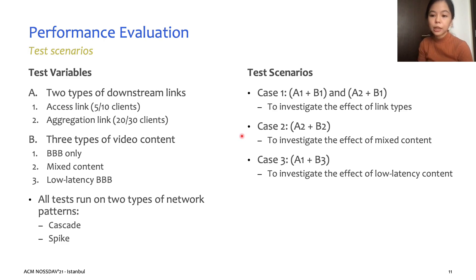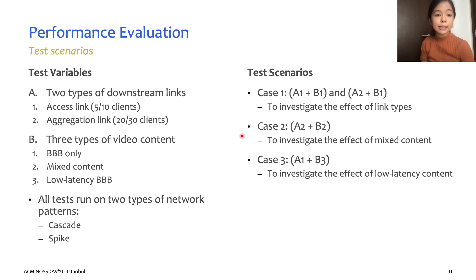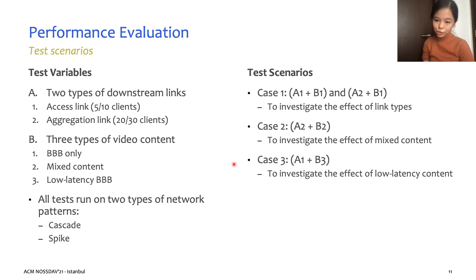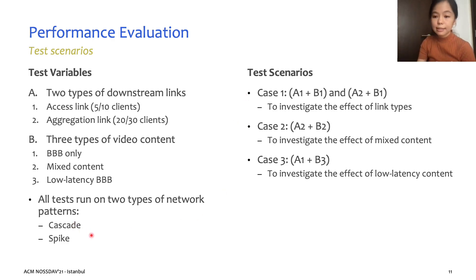In Case 2, we wish to simulate a more realistic scenario where clients are streaming different videos concurrently, so we use the mixed content dataset. Finally, in Case 3, we investigate the effect on a more challenging streaming scenario that is increasingly of interest to the streaming community, using low-latency streams. Note that all of these tests are run on two types of network patterns — the cascade and spike patterns — and we take the average results across five runs for each test.